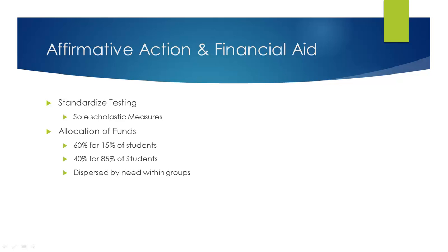Regarding allocations of funds, institutions may allocate funds to students based on race, but they need to be careful. For example, an institution that reserves 60% of its financial aid for minorities, when only 15% of the incoming class are minorities, is considered unconstitutional — because that leaves only 40% of funds for 85% of the students. Within any category of funds, allocation must be dependent upon need, not just race. The key issue is that non-minority students with the same financial need as minority students end up receiving less aid. Allocations of funds must be dispersed by need within specific groups.